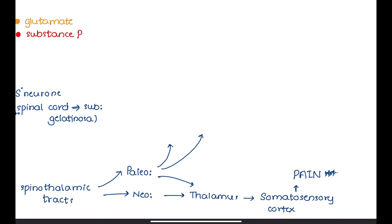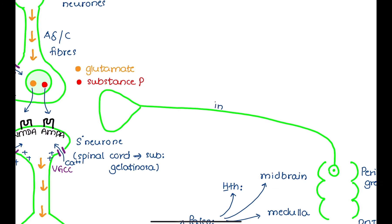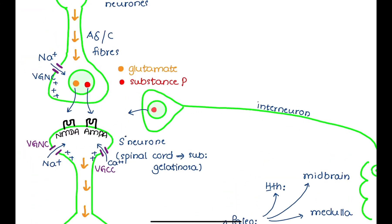In the paleospinothalamic pathway, some fibers terminate in the hypothalamus, the periaqueductal gray matter of the midbrain, and the reticular nuclei of the medulla. From the midbrain, signals travel down as an interneuron with a synapse between the primary and secondary neurons at the spinal cord. These interneurons release endogenous opiates such as enkephalin, which inhibit the transmission of pain signals.